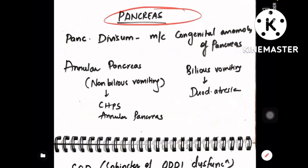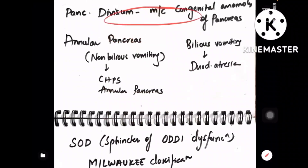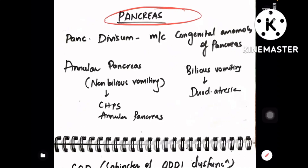I have got all the important points and criteria that you need to know from pancreas. This video does not include the entire chapter of pancreas, but gives you an idea of what to concentrate on. I have mnemonics for Ranson's criteria and a few other cystic neoplasms of pancreas.